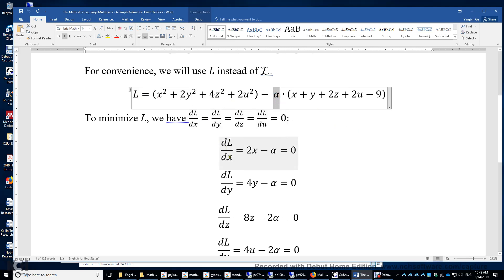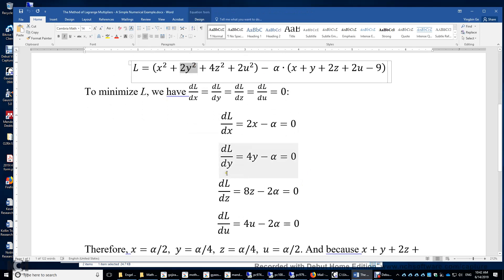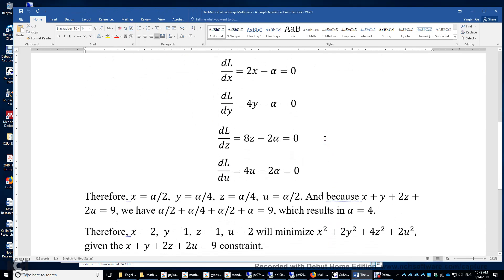All right, so dL over dx is 2x minus alpha. dL over dy, over here, you get 4y. Over here, you get minus alpha. Similarly, we have dL over dz, dL over du, so we get 4 linear functions. And really, those are simple functions. Alpha equals 2x, alpha equals 4y, 2 alpha equals 8z, 2 alpha equals 4u.